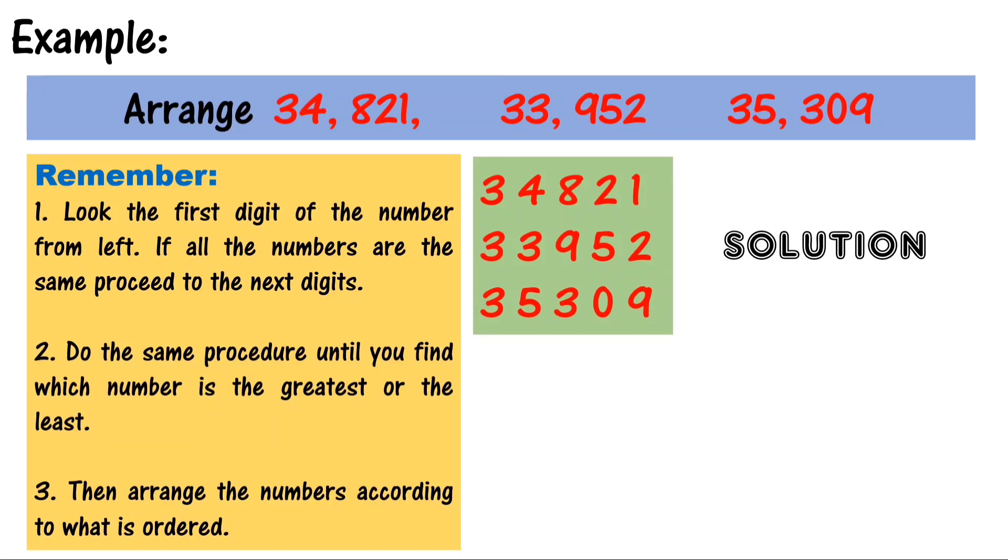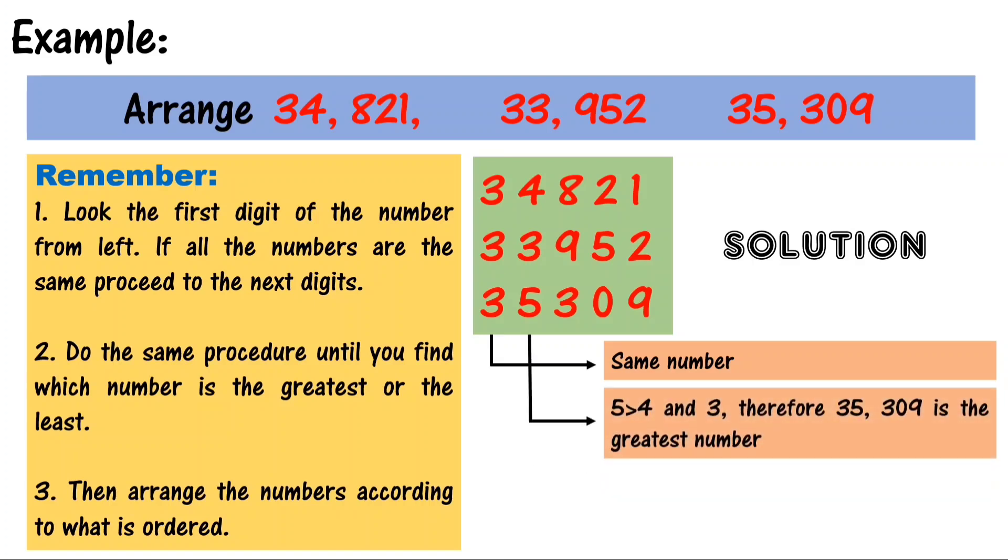Here is the solution for this number. Look at the first digit of the number from the left. The first digit of these numbers are all the same, 3. Let us look at the thousands place. 5 is greater than 4 and 3. Therefore, 35,309 is the greatest number. To arrange the numbers from greatest to least, we have 35,309, 34,821, and 33,952.